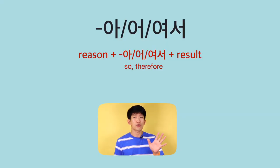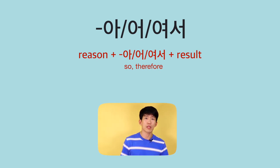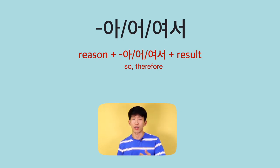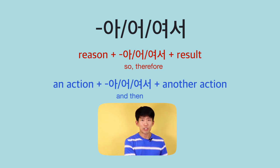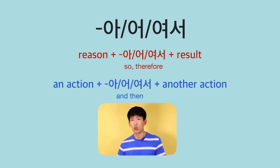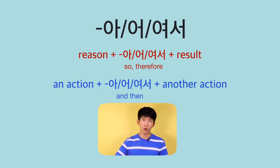가지고 basically means 'this is the reason, so therefore this is the result.' It's often translated as 'so' or 'therefore,' or it connects one action and then another following action. The following action can be related, or it might not be related to the previous action. That's the general explanation — here are some sample sentences.